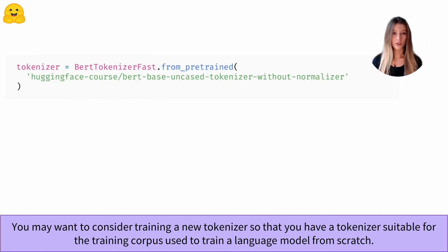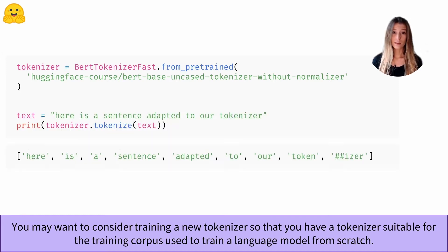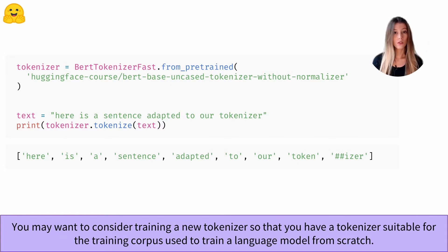If I take the tokenizer trained on the BERT-base uncased model and ignore its normalization step, we can see that the tokenization of the English sentence 'here is a sentence adapted to our tokenizer' produces a rather satisfactory list of tokens — this sentence of 8 words is tokenized into 9 tokens.